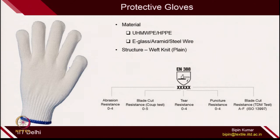Knit for protective gloves — knitting is also being used for protection. Because of very good shear performance, knitting is used for cut-resistance protective gloves, where ultra-high molecular weight polyethylene and high-performance polyethylene are used. We use E-glass, aramid, or steel wire in the structure to give very good cut performance. Mostly weft-knitted plain structures are used. I also have one cut-resistance glove with me which I can show you.